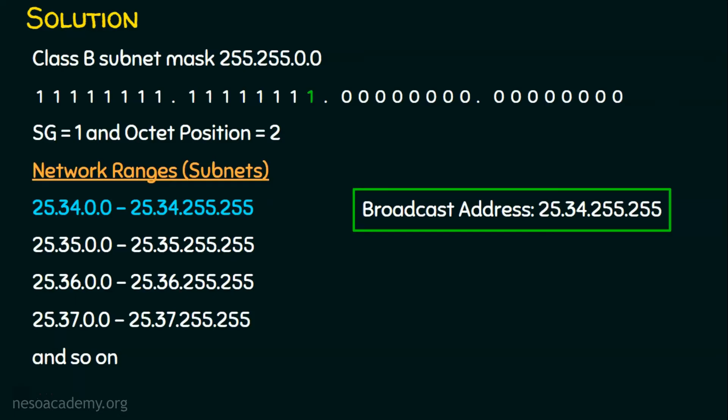Now we will solve this in a formal way. In the previous lecture, we found the network address using a simple AND operation — the bitwise AND operation. But for finding the broadcast address in this problem, we are going to use the bitwise OR operation.